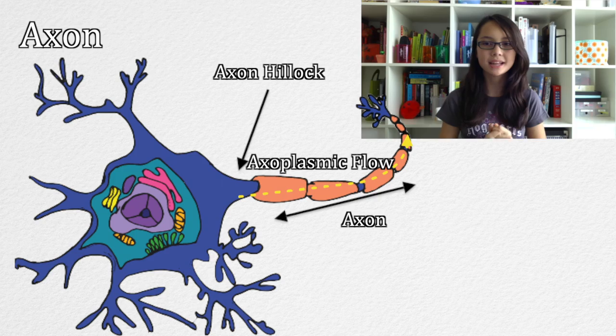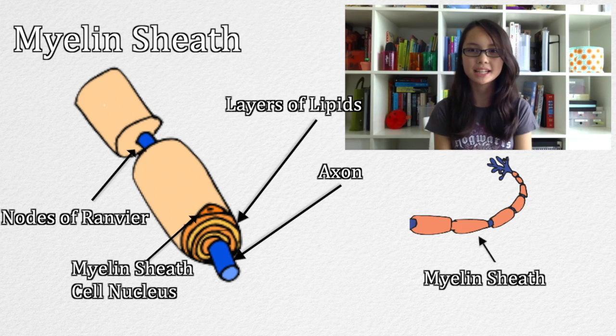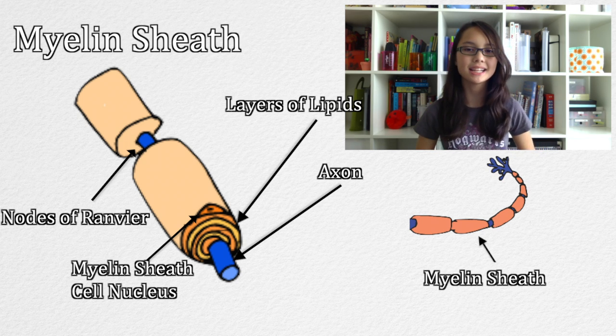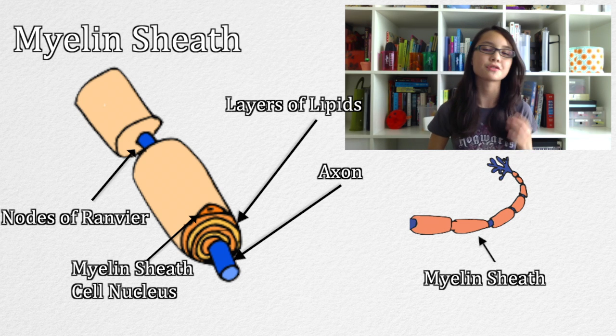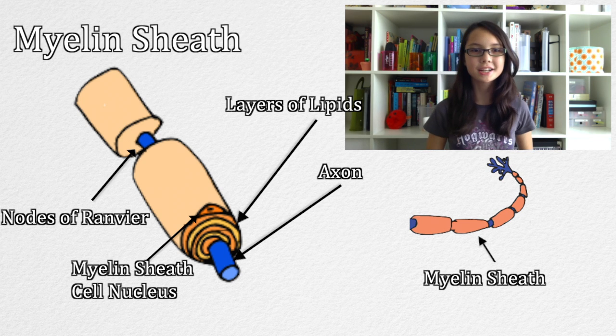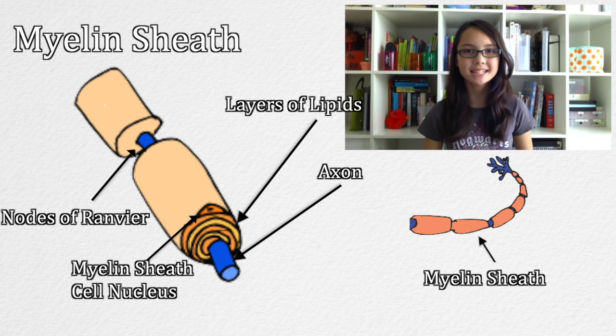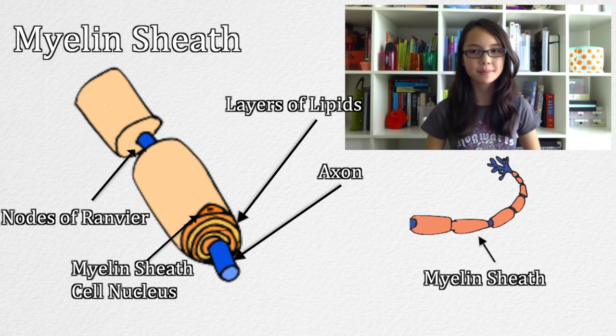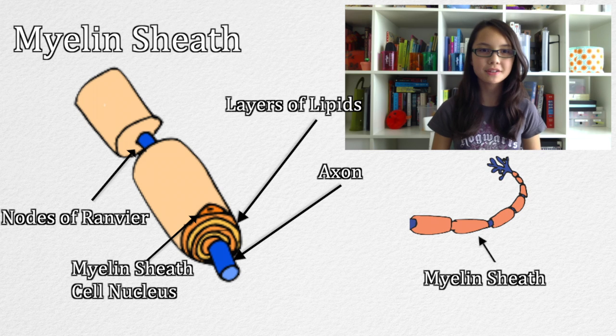At the end of the axon, it branches out into many different terminals. The myelin sheath, or Schwann cell, is a separate cell from the neuron that helps the neuron conduct electrical signals. The myelin sheath is composed of 80% lipids, mainly cholesterol, and 20% protein. These lipids are separated by layers of protein to provide high electrical resistance, making the myelin sheath a great electrical insulator to the axon. Think of the myelin sheath as a rubber coating on a copper wire — it ensures the electrical signal follows a certain path to the correct destination. However, the myelin sheath is broken up into segments with gaps in between, called the nodes of Ranvier.